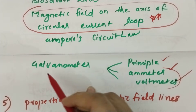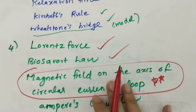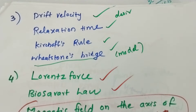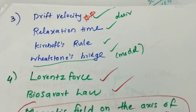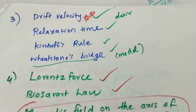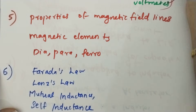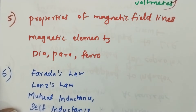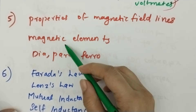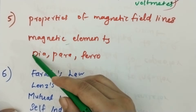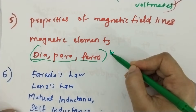You can also learn the fifth item. In this chapter, you can learn drift velocity and the high chance. In the fifth chapter, you can learn magnetic field lines and magnetic elements.